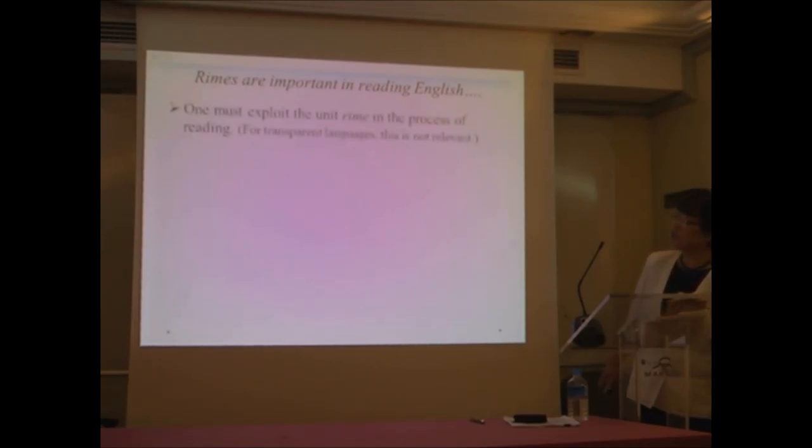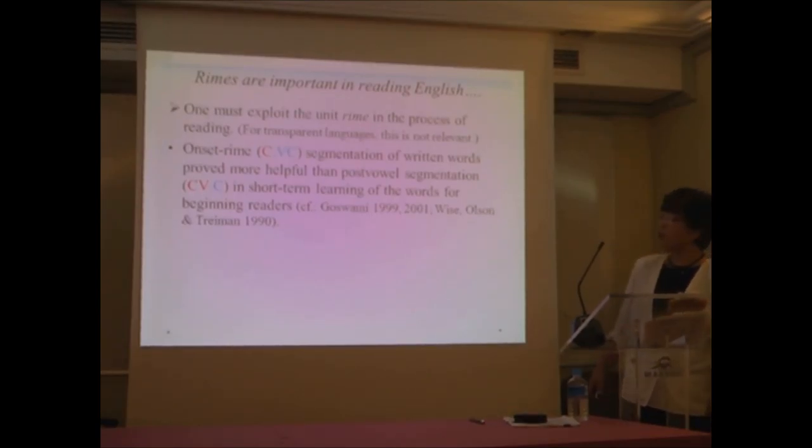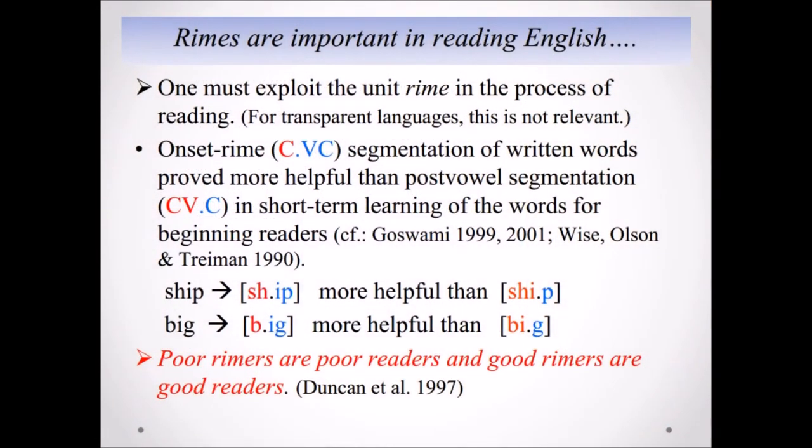So one must exploit the unique rhyme in the process of reading. So rhymes are important in reading English. For transparent languages this is not relevant. Onset-rhyme segmentation of written words proved more helpful than post-vowel segmentation in short term learning of the words for beginning readers. This kind of finding is in harmony with the importance of rhyme in reading English. So for the word 'sheep' is more helpful than 'sh-eep,' or 'cat' is more helpful than 'ca-t.' So this is another slogan: poor rhymers are poor readers and good rhymers are good readers.